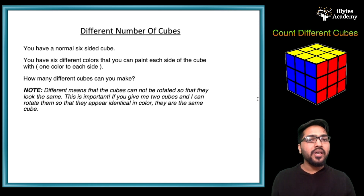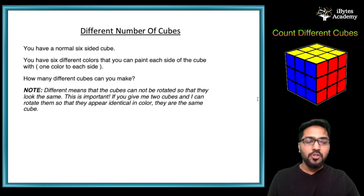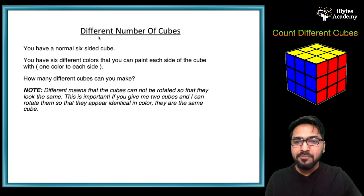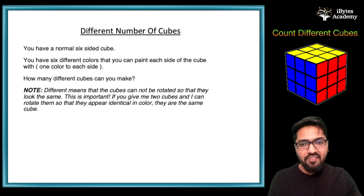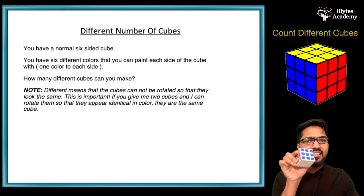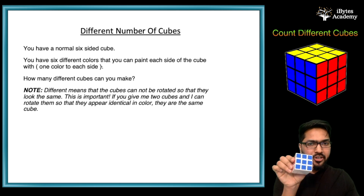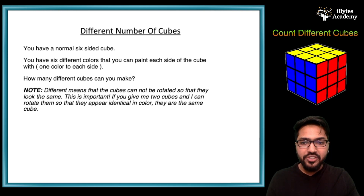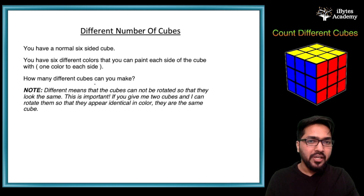The puzzle we are looking at today is about a cube. You have a normal six-sided cube, just like the one I have over here. You have six different colors that you can paint each side of the cube with — one color to each side. How many different cubes can you make?